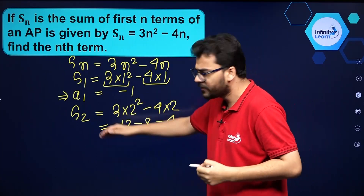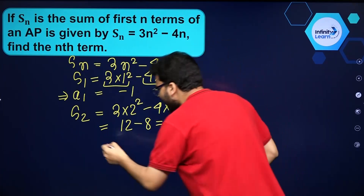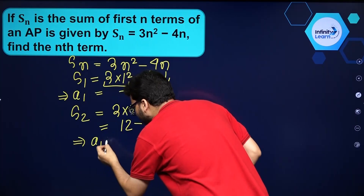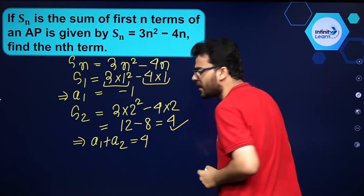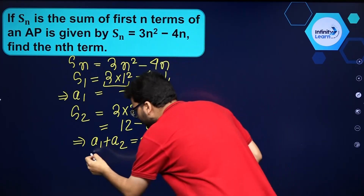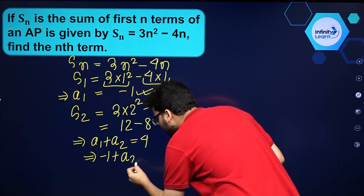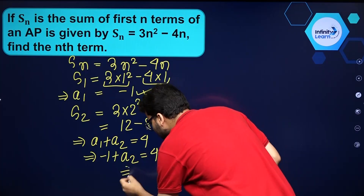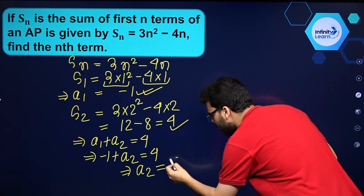Now what is S2? S2 means the sum of the first 2 terms of the AP, which is nothing but a1 plus a2, and that equals 4. Now a1 we already know is minus 1, so minus 1 plus a2 equals 4. Therefore a2, the second term of this AP, is equal to 5.